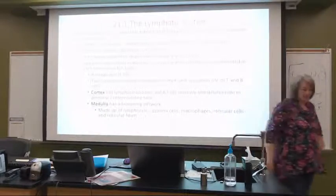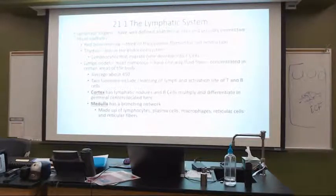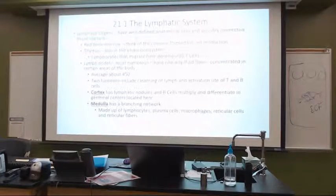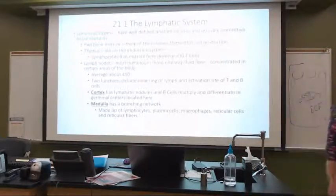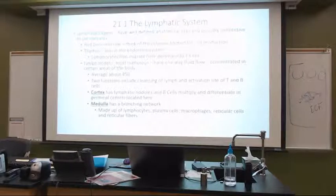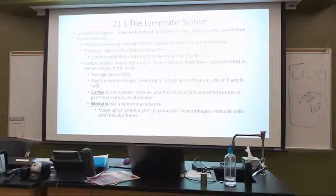Our lymph nodes are very numerous, with one-way fluid flow, concentrated in areas of the body. On average we have about 450, which is sort of a lot when you think about it being only in the trunk. There are two functions: cleanse lymph and provide the site of activation for T-cells and B-cells. That's what our lymph nodes do.